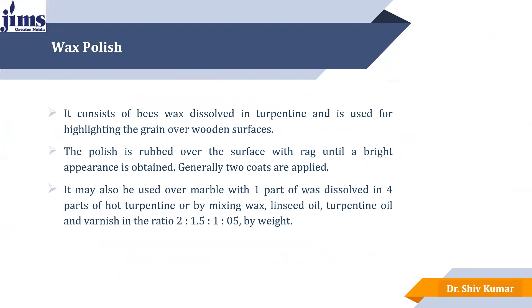Next is wax polish. It consists of beeswax dissolved in turpentine oil and is used to highlight the grains over wooden surfaces. The polish is rubbed with sandpaper and generally 2-3 coats are applied to make the finished surface.